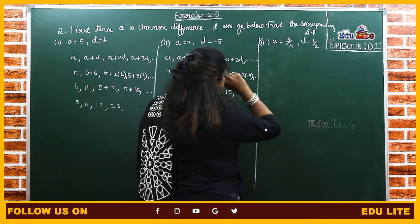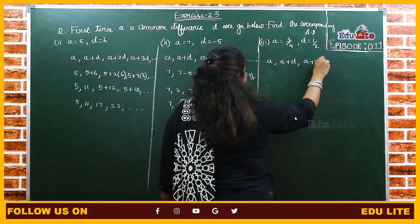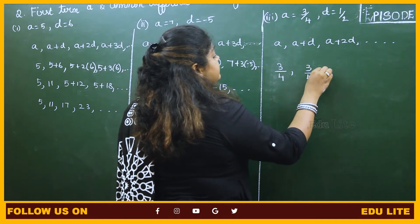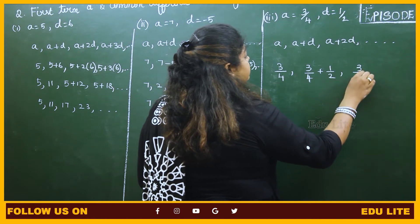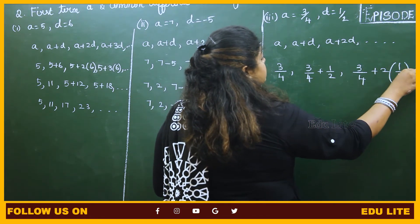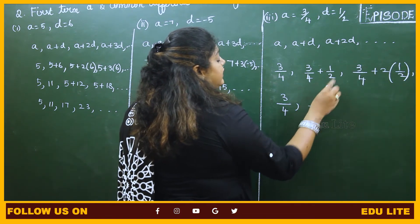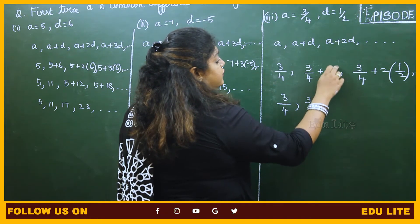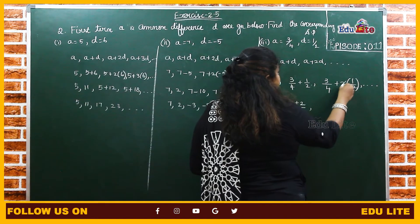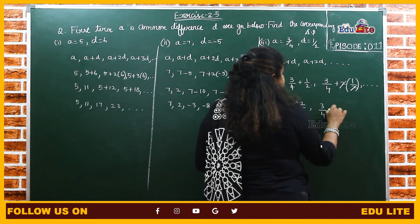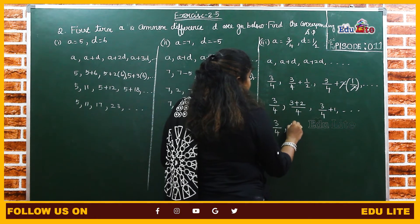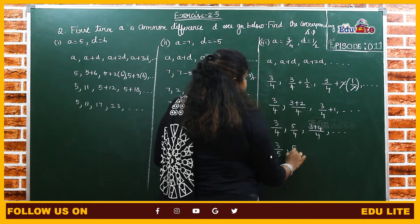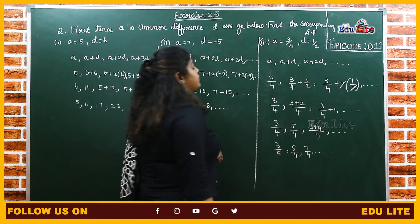For the third subdivision, A is 3/4 and D is 1/2. Using the AP formula: 3/4, then 3/4 plus 1/2 — taking LCM of 4 and 2 which is 4, we get 3/4 plus 2/4 equals 5/4, then 3/4 plus 2 into 1/2 equals 3/4 plus 1 equals 7/4, and so on. The AP is 3/4, 5/4, 7/4, and it continues.